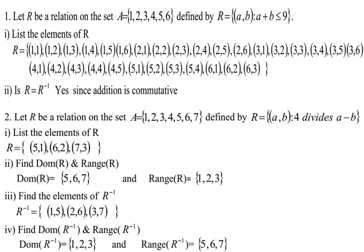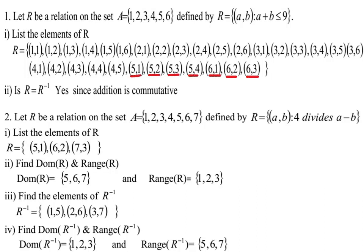Continuing the list of R: (1,4), (1,5), (1,6), (2,1), (2,2), (2,3), (2,4), (2,5), (2,6), (3,1), (3,2), (3,3), (3,4), (3,5), (3,6), (4,1), (4,2), (4,3), (4,4), (4,5), (5,1), (5,2), (5,3), (5,4), (6,1), (6,2), and (6,4). These ordered pairs all satisfy the relation R.